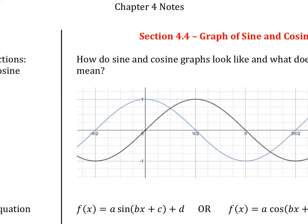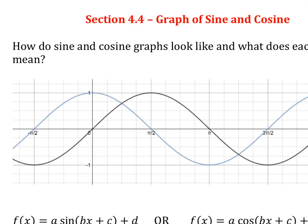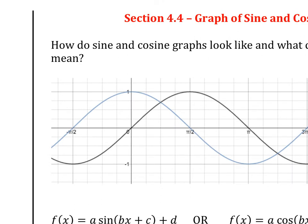Okay, quick review. Let's have you talk to your partner. Which graph is sine? Which graph is cosine? You have two graphs, black or blue. Which one is which? So the blue one is cosine, y equals cosine x. You can tell which one is sine and cosine by where they start. Sine always starts at (0, 0), and cosine always starts on the top at a maximum.